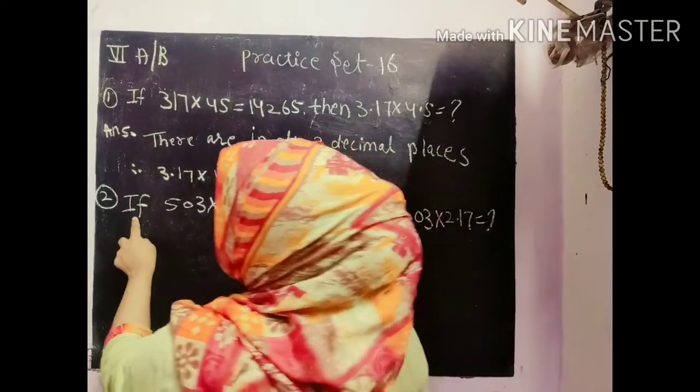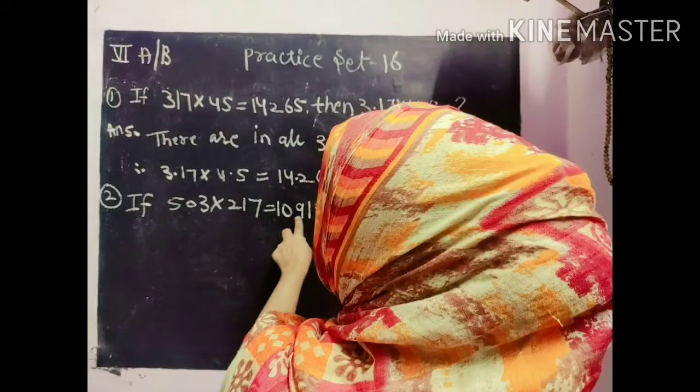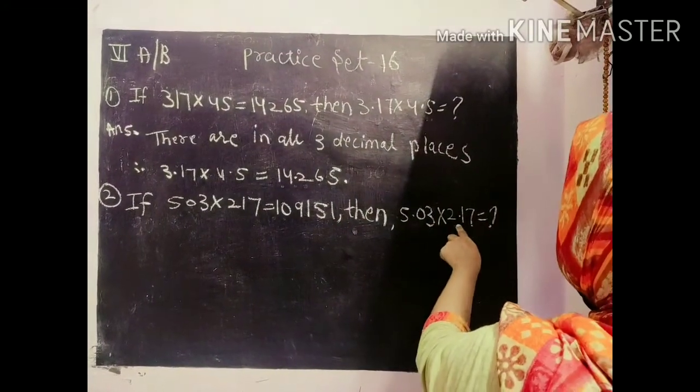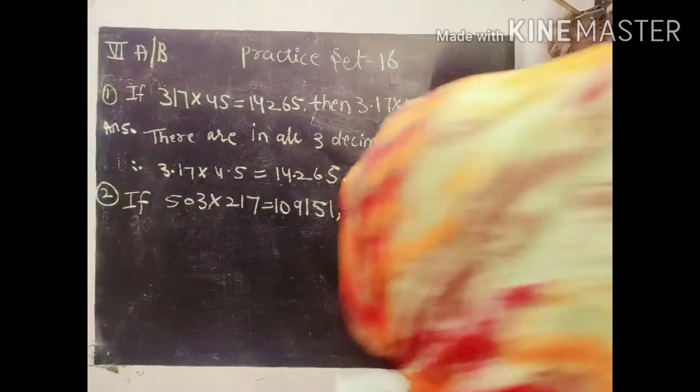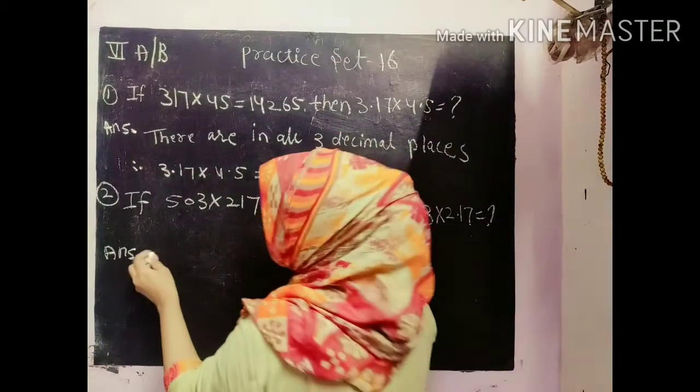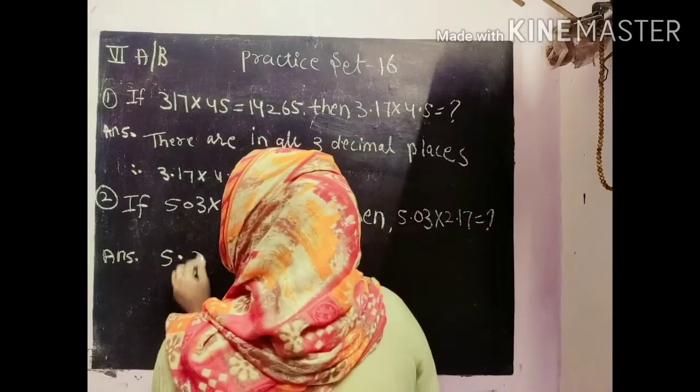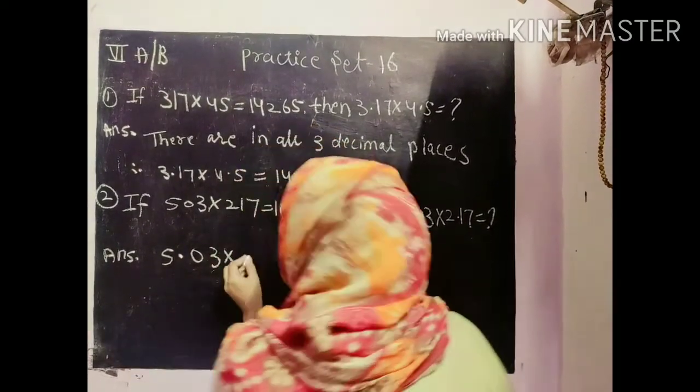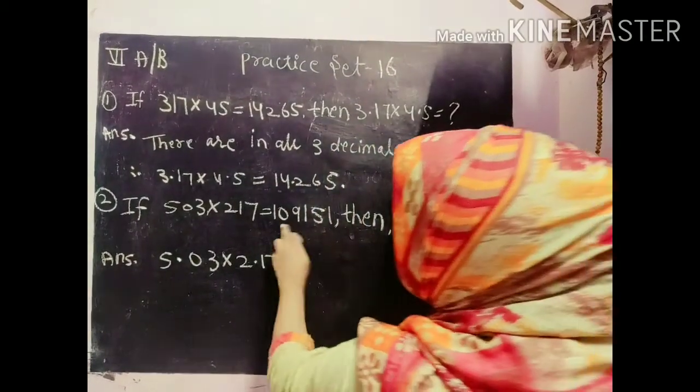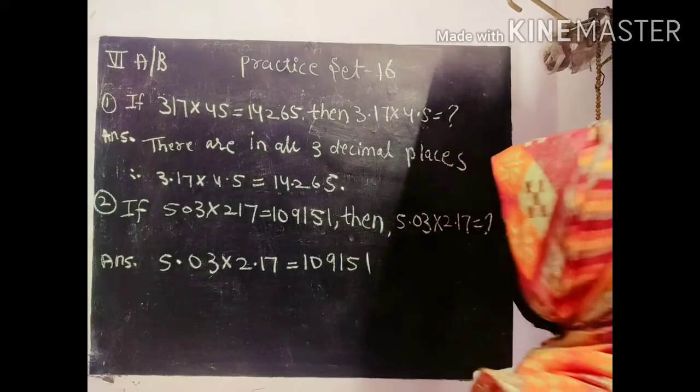Now come to question number 2. So if 5.03 into 2.17 is equal to 109151 then 5.03 into 2.17 we will have to write the answer. So here again what will be the answer?